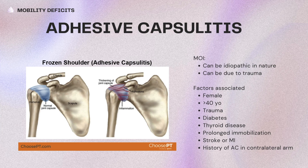Mechanism of injury can be idiopathic in nature or due to trauma. Factors associated with adhesive capsulitis include female sex, age greater than 40, trauma, diabetes, thyroid disease, prolonged immobilization, stroke or heart attack, or history of adhesive capsulitis in the other arm.